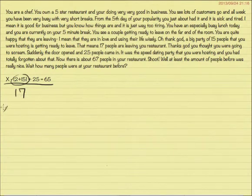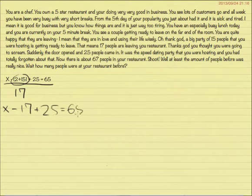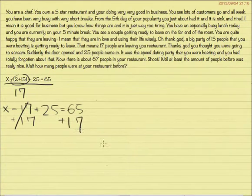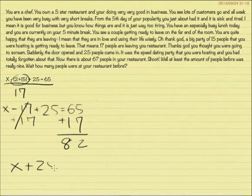So it will be x minus 17 plus 25 equals 65. Now, we are here to work that way down. So first we must get rid of the variable. So 15 and 17, we get rid of that plus we add it with here. And that will be 12 and 82.